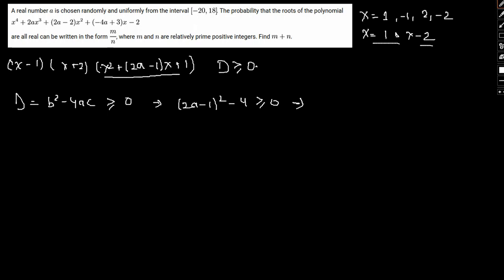So this would further imply that a will either be greater than or equal to 3 by 2 or a will be less than or equal to minus 1 by 2. So that means the interval minus 1 by 2 comma 3 by 2, this particular interval is the bad interval. This interval is nothing but a bad interval.